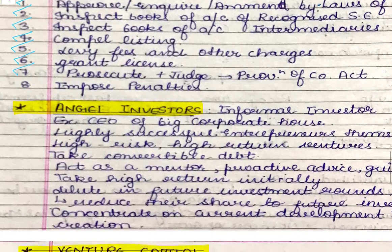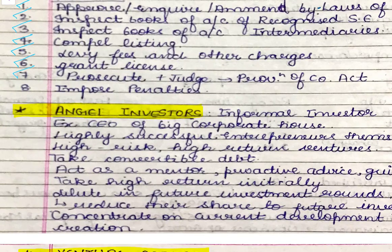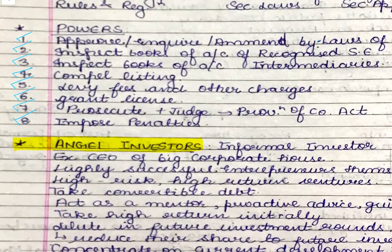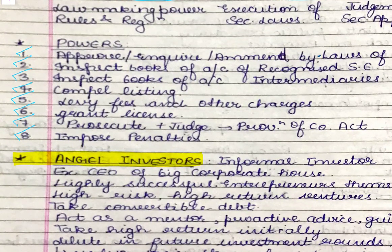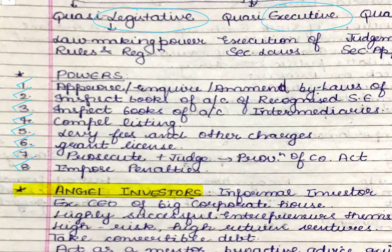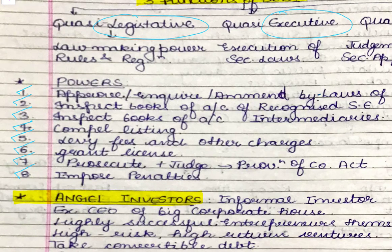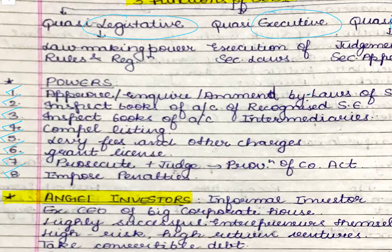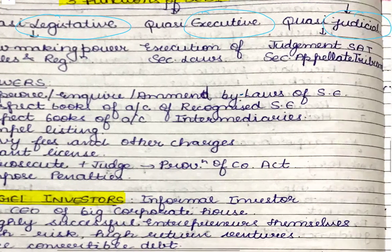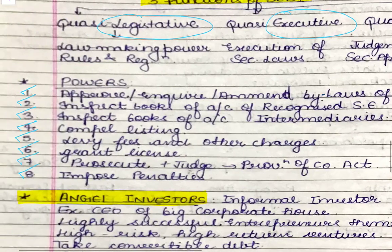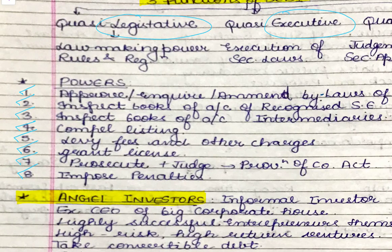SEBI can impose penalties for violation of the rules, regulations, and laws that it makes. As explained in the previous video, SEBI is a legislative body — so SEBI has lawmaking power — and it is also a judicial body, so it can impose penalties and carry out prosecution as well. These are the powers of SEBI.